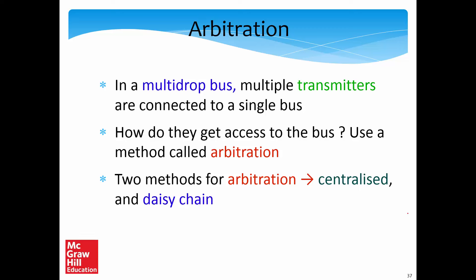After discussing reliable transmission between a sender and a receiver, let us now look at another aspect of the data link layer called arbitration. Consider a typical multi-drop bus where multiple transmitters are connected to a single bus — a set of copper wires. As we have seen in the snoopy protocol, multiple nodes are connected to a bus. Since multiple nodes can send but not all of them at the same time, only one node can send a message at once — this requires arbitration.